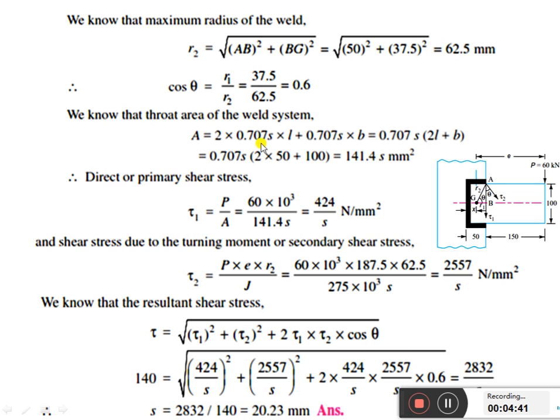One transverse and parallel double parallel fillet weld. If you substitute the values, the area will be 141.4s mm².